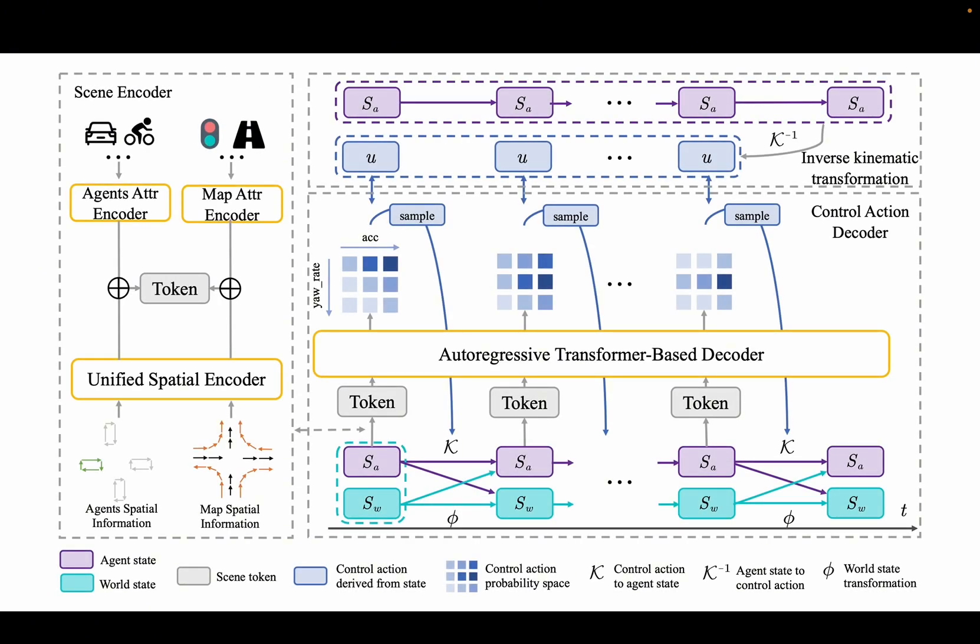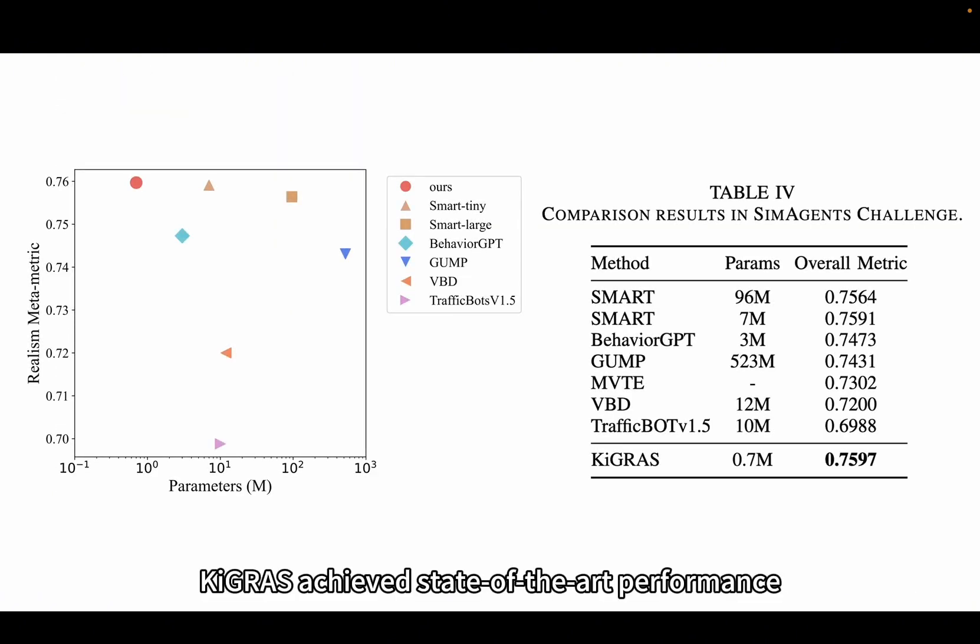In Keygrass, we introduce a new autoregressive paradigm for trajectory generation by shifting the prediction objective to control actions. Keygrass achieves state-of-the-art performance in the Sim Agents Challenge with significantly fewer parameters than other models.